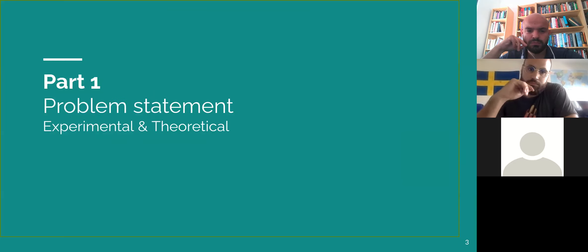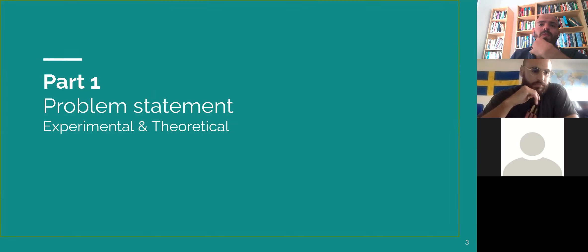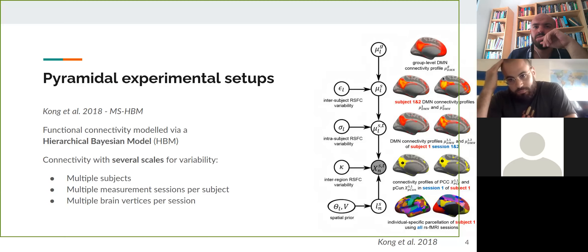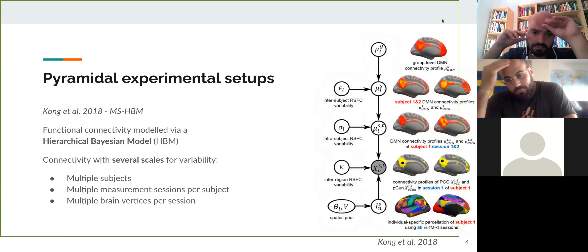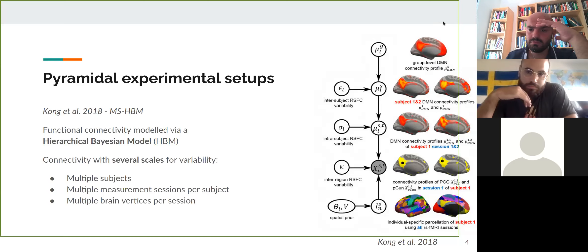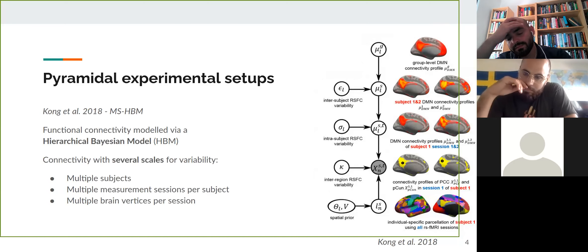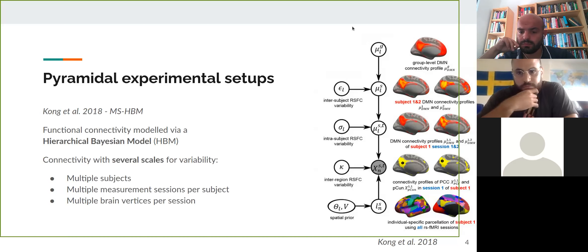The general problem statement is both experimental and theoretical — the class of problems motivates the technology we developed. We are interested in pyramidal experimental setups, illustrated by a multi-scale hierarchical Bayesian model from Kong and colleagues 2018, which models functional connectivity via a hierarchical Bayesian model. This connectivity features multiple scales of variability: multiple subjects, multiple measurement sessions per subject, and multiple brain vertices per session for which we measure the EEG signal.